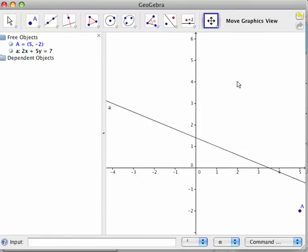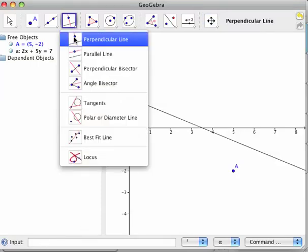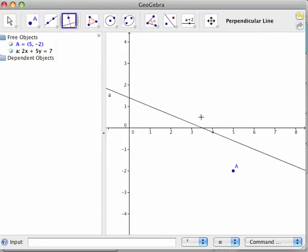So we want a perpendicular line to that through point A. So GeoGebra is kind of nice because it can do a perpendicular line. So I'll hit A, I'll hit the line.